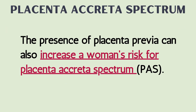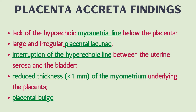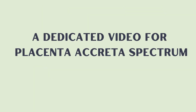The presence of placenta previa can also increase a woman's risk for placenta accreta spectrum. This spectrum describes different grades of abnormal placental attachment to the uterine wall, including placenta accreta, increta, and percreta. Ultrasound findings suggesting placenta accreta include: lack of the hypoechoic myometrial line below the placenta, large and irregular placental lacunae, interruption of the hyperechoic line between the uterine serosa and the bladder, reduced myometrial thickness less than 1 mm underlying the placenta, and placental bulge. A dedicated video for placenta accreta spectrum will be made.